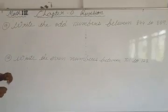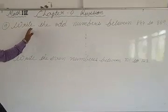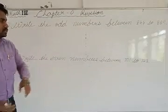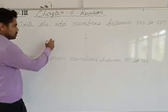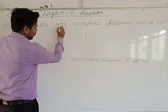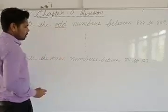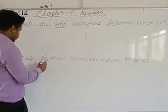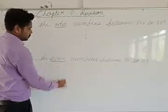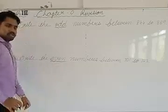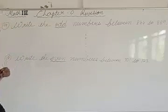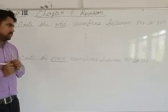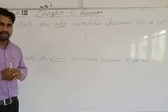The first question, number 9, is: write the odd numbers between this to this. Question number 8 is asking about odd numbers and question number 10 is asking about even numbers. So first, let's learn what even numbers and odd numbers are.